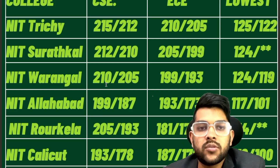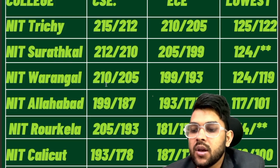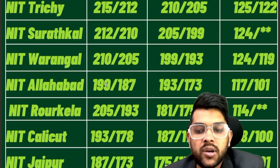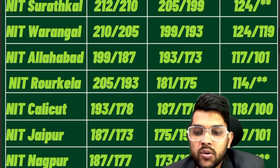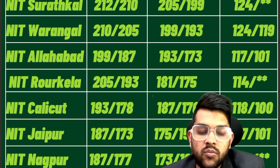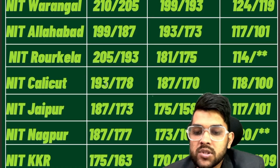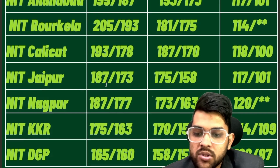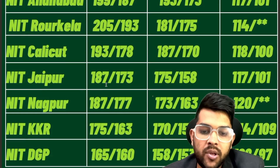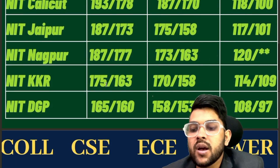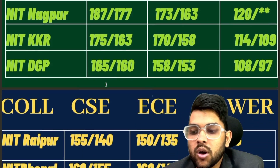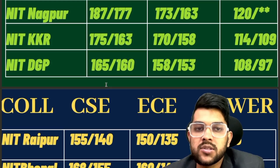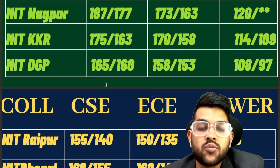For NIT Jaipur: 187, 175, lowest 117. For Nagpur: 187, 173, lowest 120. For Kurukshetra: 175, 170, lowest 114. For Durgapur: 165, 158, lowest 108 marks. For Raipur: 155, 150, and lowest 101 marks.